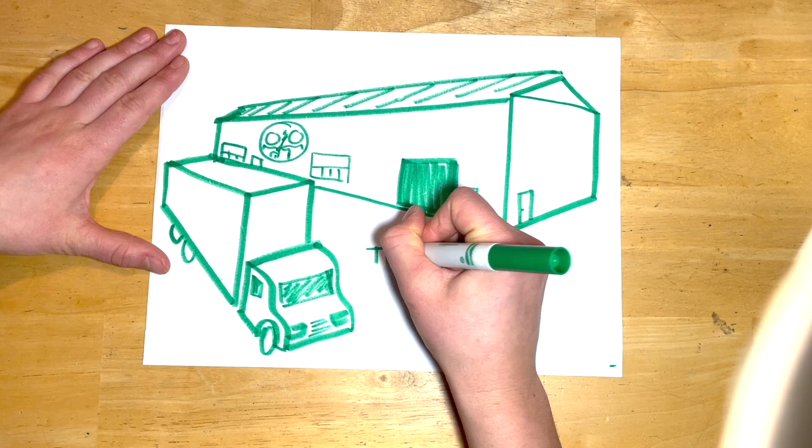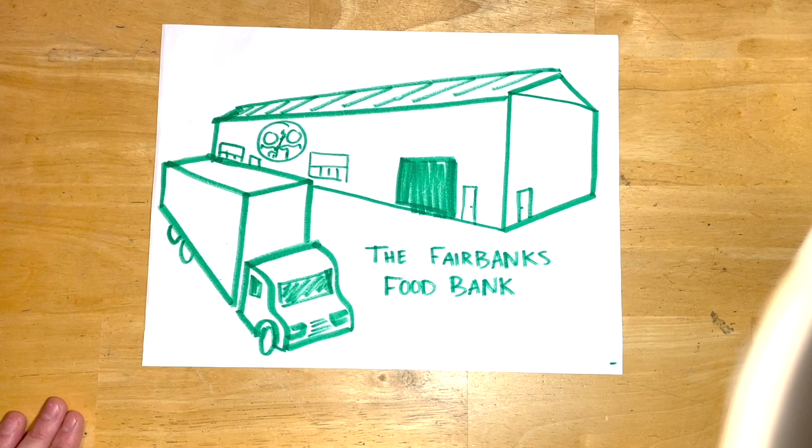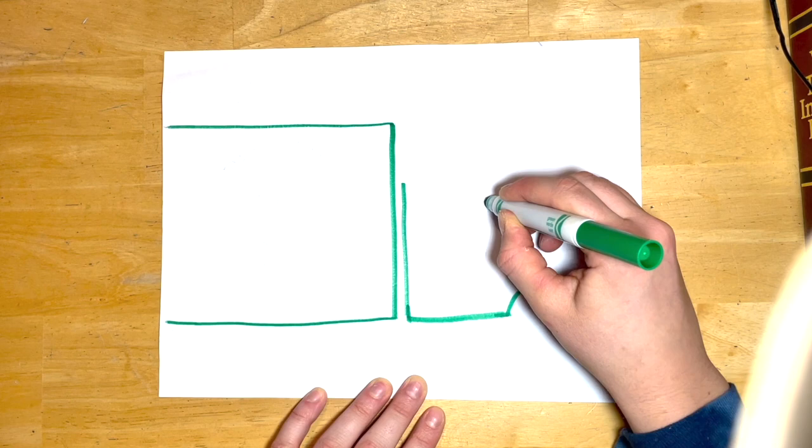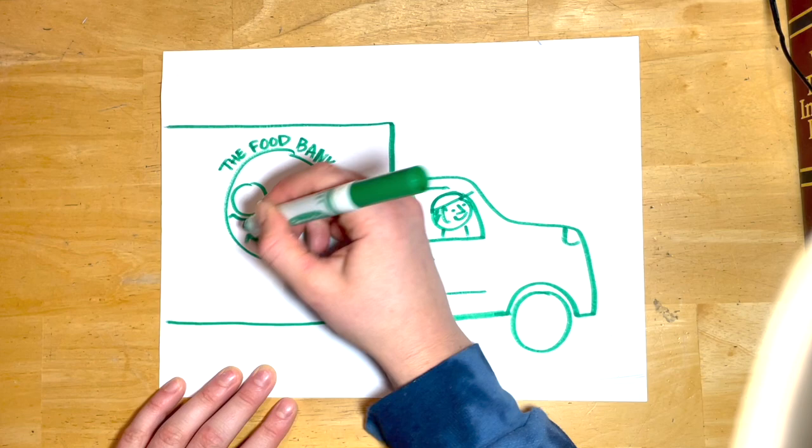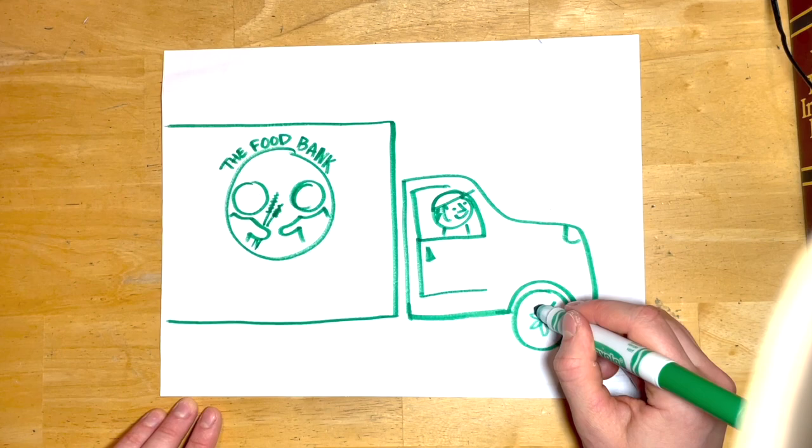This is the Fairbanks Food Bank. For this project I chose the Sustainability Development Goal number two, which says solve world hunger. This is just one organization in my town that is really focused on doing that for the state of Alaska.